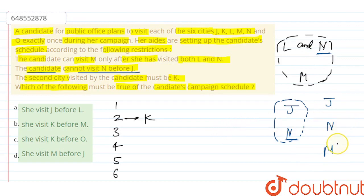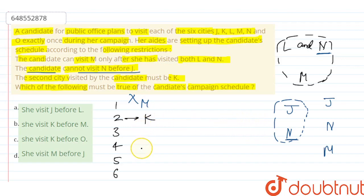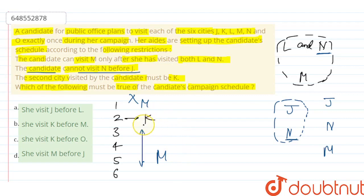If J, N, and L must come before M, and M cannot come before J, then M cannot be in the first position. Considering the constraints, K comes before M. So Option B — she visits K before M — will be correct. Thank you.